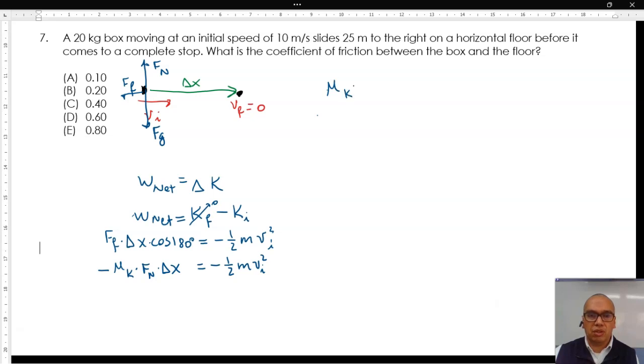So the coefficient of friction times mass times gravitational acceleration times displacement is equal to one half times mass times initial speed squared.